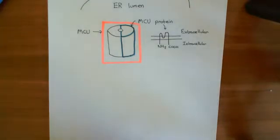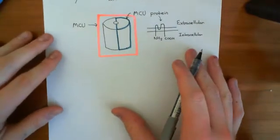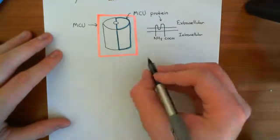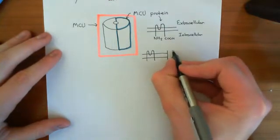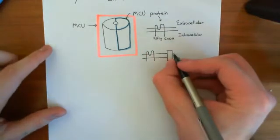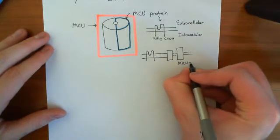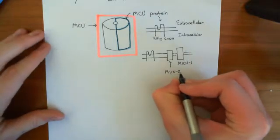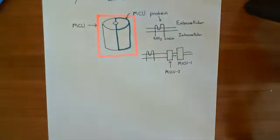There are also proteins which modulate the function of the MCU channel, and in particular they modulate the function of the MCU protein. In association with each one of these MCU proteins there are two other proteins. These are known as MICU1 and MICU2. MICU1 and MICU2 are involved in modulating the function of the MCU channel. Their role is to sense calcium level and change whether this MCU protein is open or closed.